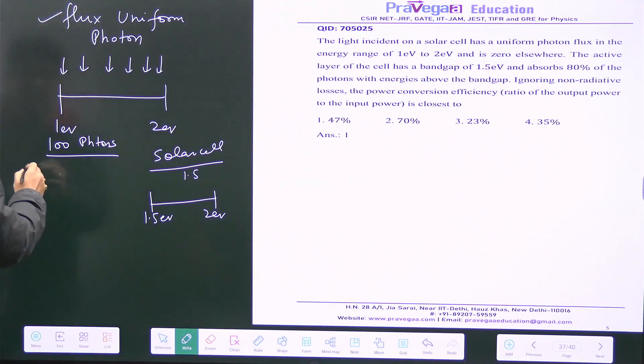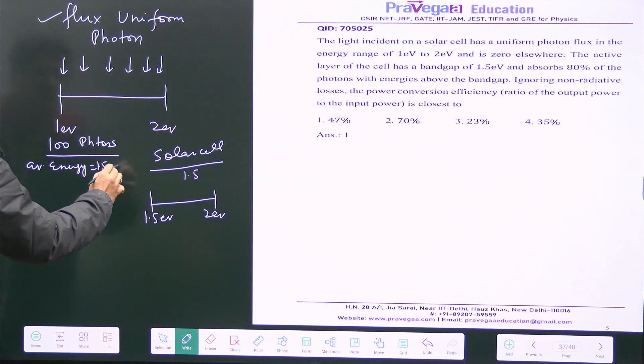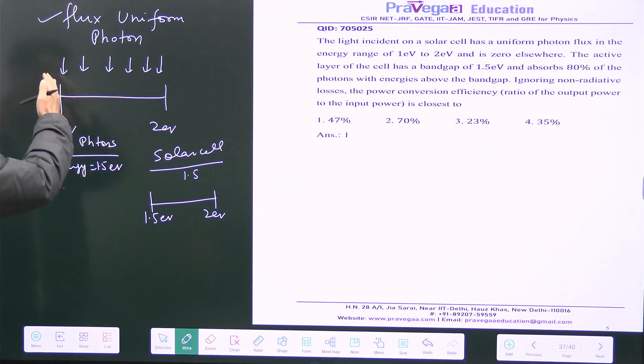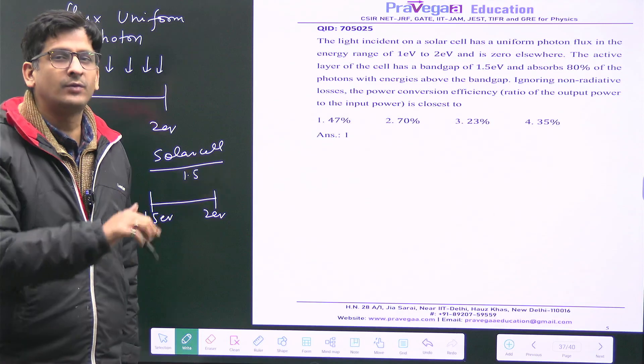Here energy is from 1 to 2 electron volt. Because there is uniform distribution, I can take on an average, average energy is equal to 1.5 electron volt. 2 plus 1 by 2, 3 by 2 which is 1.5. This I can only take when there is equal distribution of photon, otherwise I would have to use probability distribution formula.